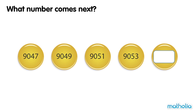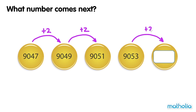What number comes next? 9047 plus 2 is 9049. 9049 plus 2 is 9051. In each step the numbers go up by 2. 9053 plus 2 is 9055. The next number is 9055.